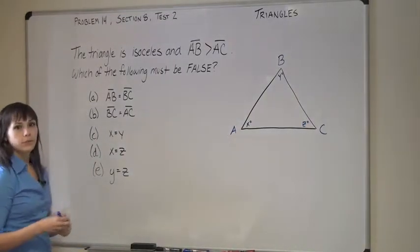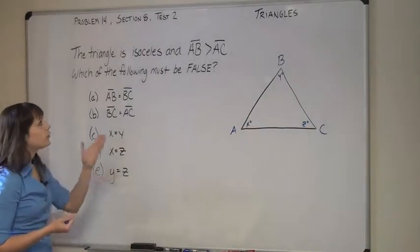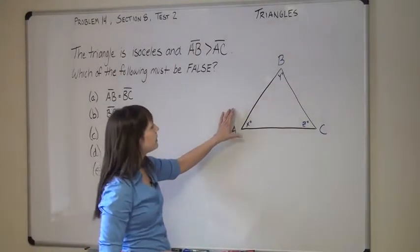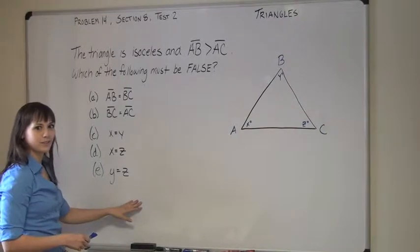As a result, when we go to say which of the following must be false, we don't have a whole lot of information to work with. Now, we know AB is not equal to AC, but that's not one of the answer choices.